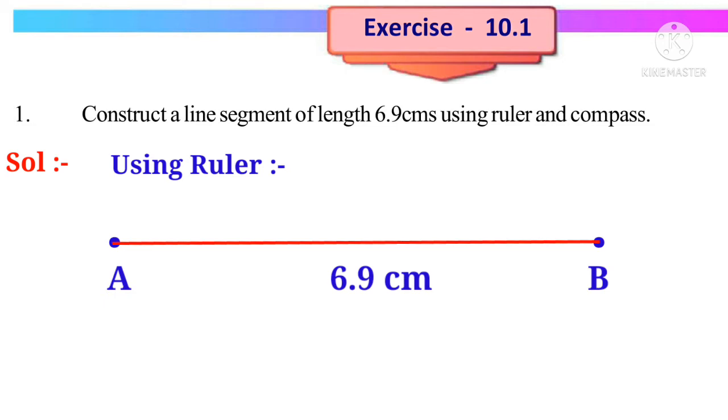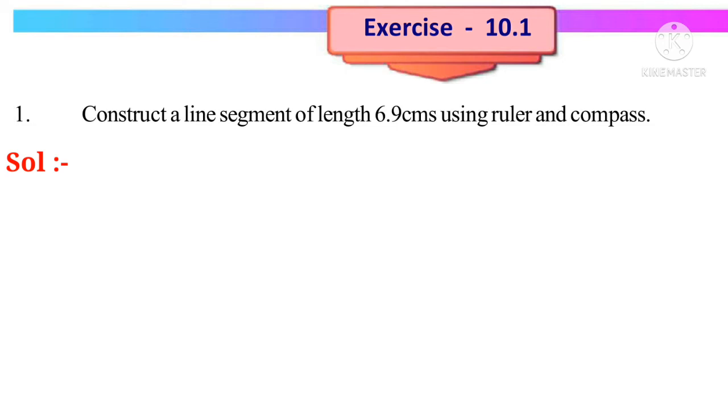Now the line segment AB is 6.9 centimeters. Before using compass, let us know what is compass. See the picture of compass.